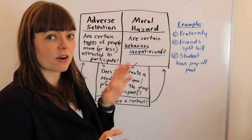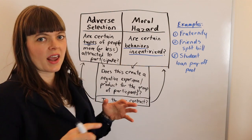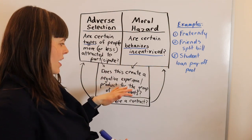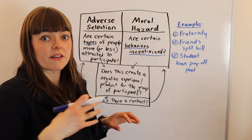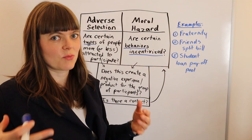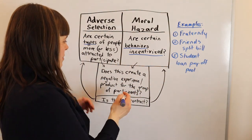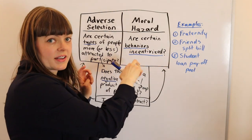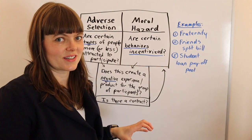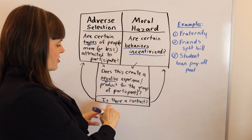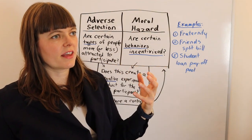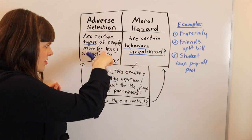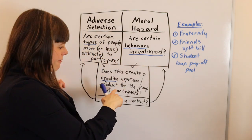After you've figured out that maybe one or the other is at play, you ask yourself: does the fact that there are these behaviors incentivized, or that these people are attracted to this situation, does that create a negative experience? Or sometimes it's a negative product for the group of participants. Is there a negative experience or product because of the behaviors that were incentivized or because of the type of person attracted to the situation? And if the answer is yes, ask yourself: is there a contract in place that's creating these behavioral incentives, or that certain types of people are attracted to, which creates something negative for a larger group?